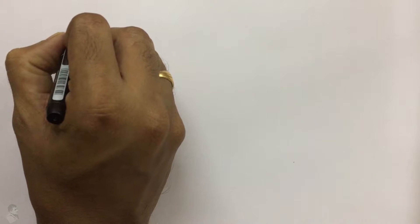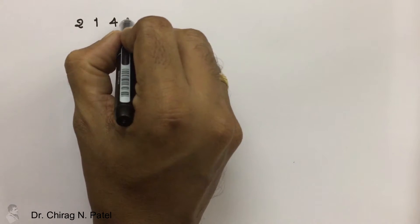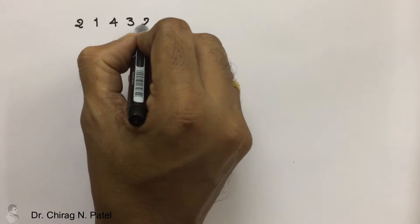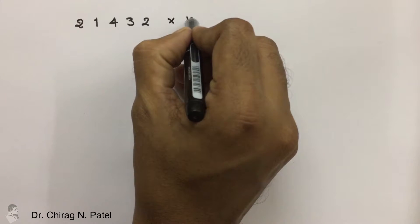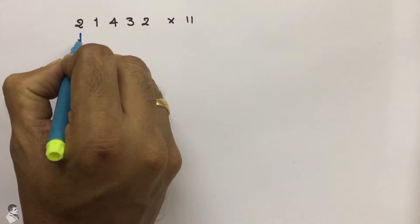How to multiply any number with 11. If you take one value, that is 21432, and multiply with 11 and try to get the answer, it is difficult to give the answer in very few seconds. So here we use a technique.